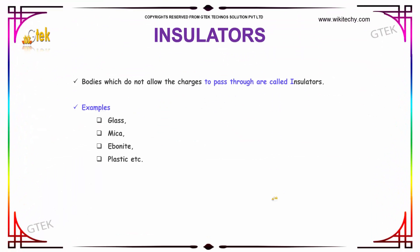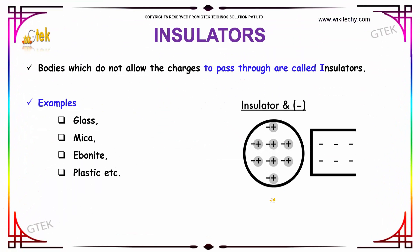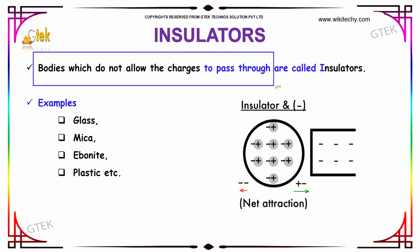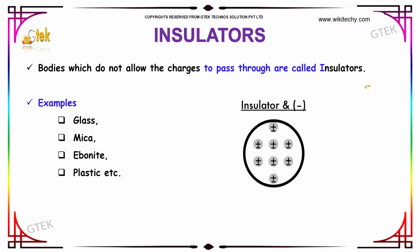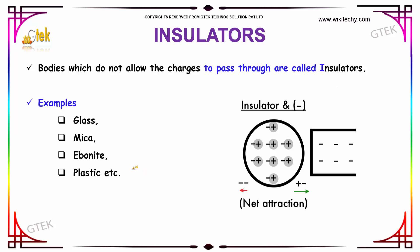Now let us talk about insulators. The bodies which do not allow the charges to pass through are called insulators. In other words, the opposite of conductors are called insulators. Some examples for insulators are glass, mica, ebonite, and plastic.